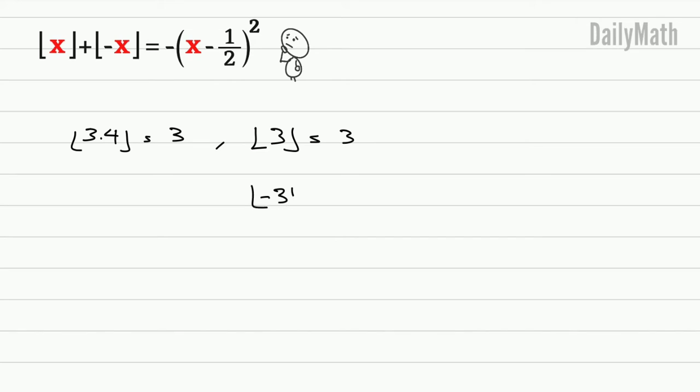negative 3 is also negative 3. This part is kind of tricky. For negative 3.4 as an example, the floor function returns negative 4 because that's the greatest integer before negative 3.4. Now we need to